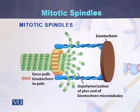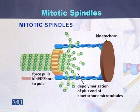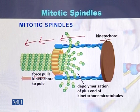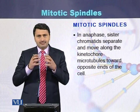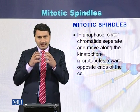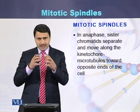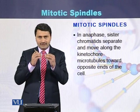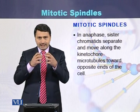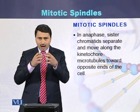In this diagram we can see how spindle fibers move the chromosomes. There is a force that pulls and ultimately the kinetochore moves towards the pole of the cell. In anaphase, sister chromatids separate with the help of spindle fibers emitting from the centrioles. They join to the kinetochore position of the centromere and move the chromosomes in opposite directions.